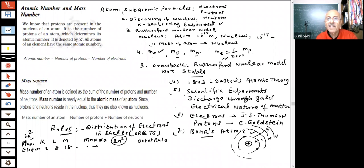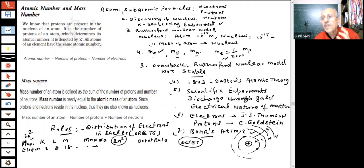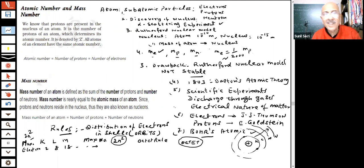What was the reason these elements were stable? They had a complete octet — the outermost shell had eight electrons. That is why no more than eight electrons are allowed in the outermost shell. This brings us to the important concept of valency.